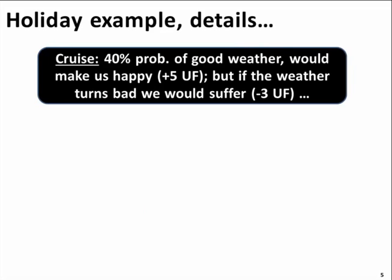Let's give some numbers. In the case of the Alaskan cruise, let's say there's a 40% probability of good weather, which would make us very happy. And rather than money, let's call it units of happiness. So we have five units of happiness. These are arbitrary numbers, but this is a good start.